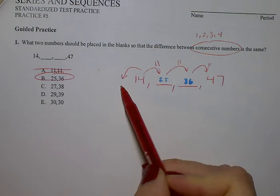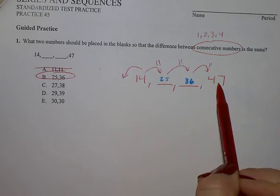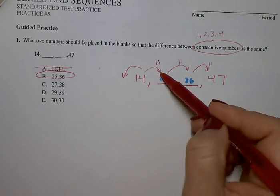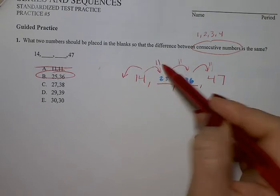Consecutive numbers, so 1, 2, 3, 4, all up to 47. And the difference between the ones that we have identified is 11. Please flip to the back.